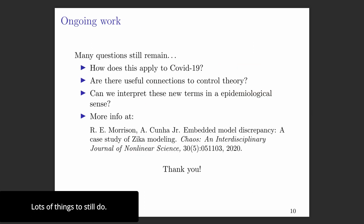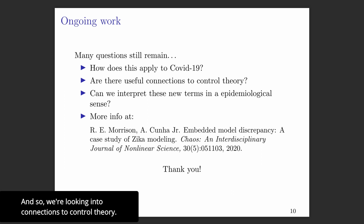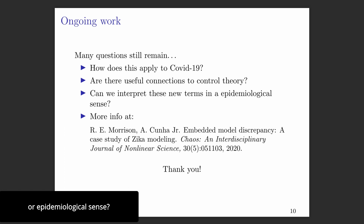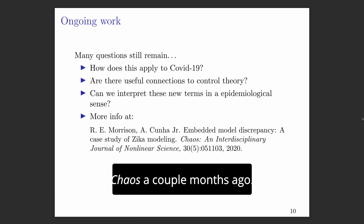There are lots of things still to do. How does this apply to the current situation? It turns out the embedded discrepancy in this work looks sort of like a linear feedback, so we're looking into connections to control theory. Can we interpret these new terms in a physiological or epidemiological sense? For more information, please check out our paper that just came out in Chaos a couple months ago. Thanks very much.